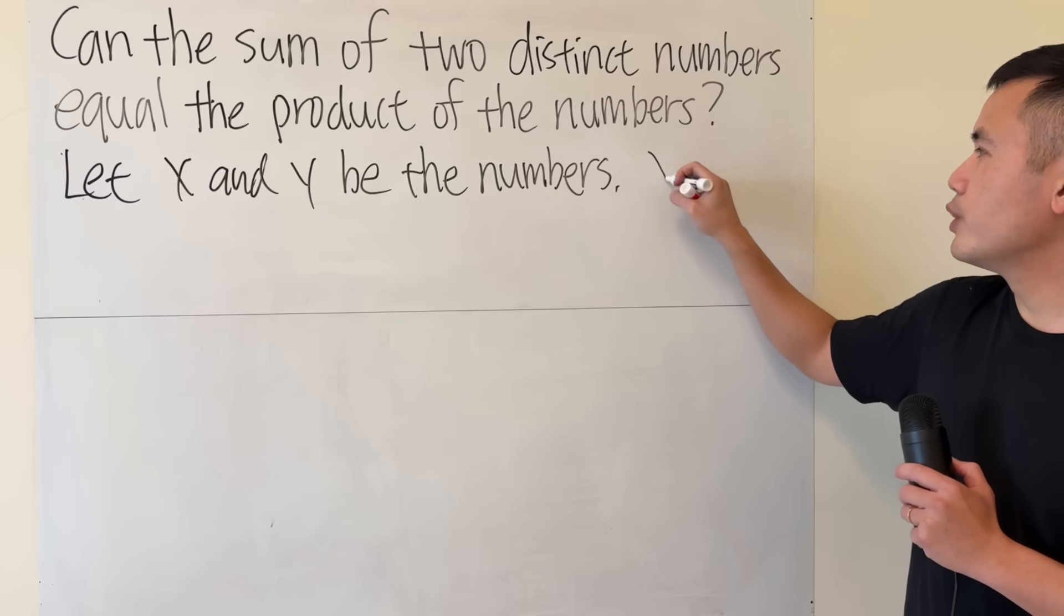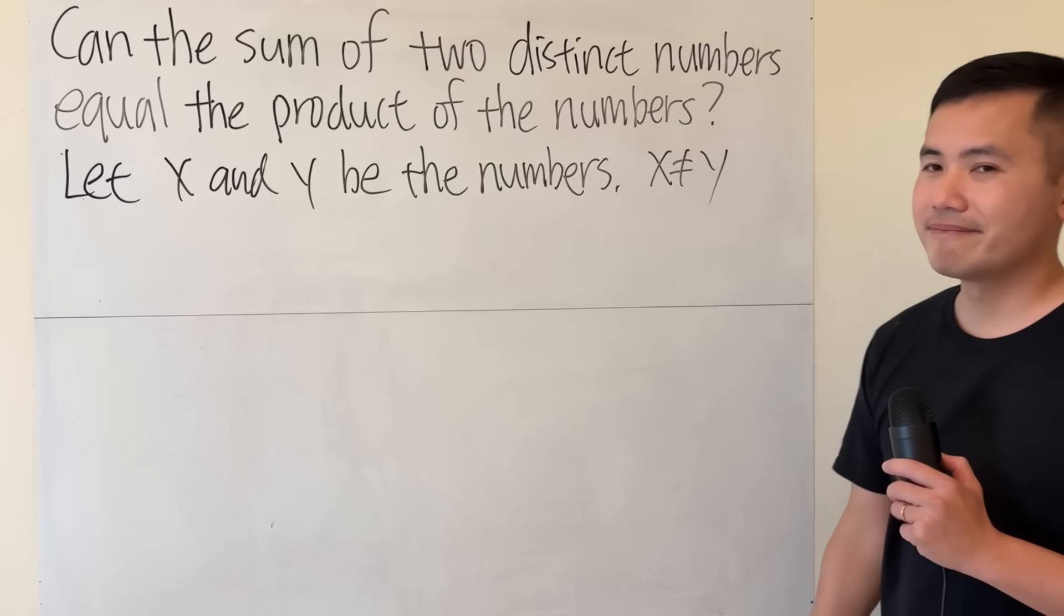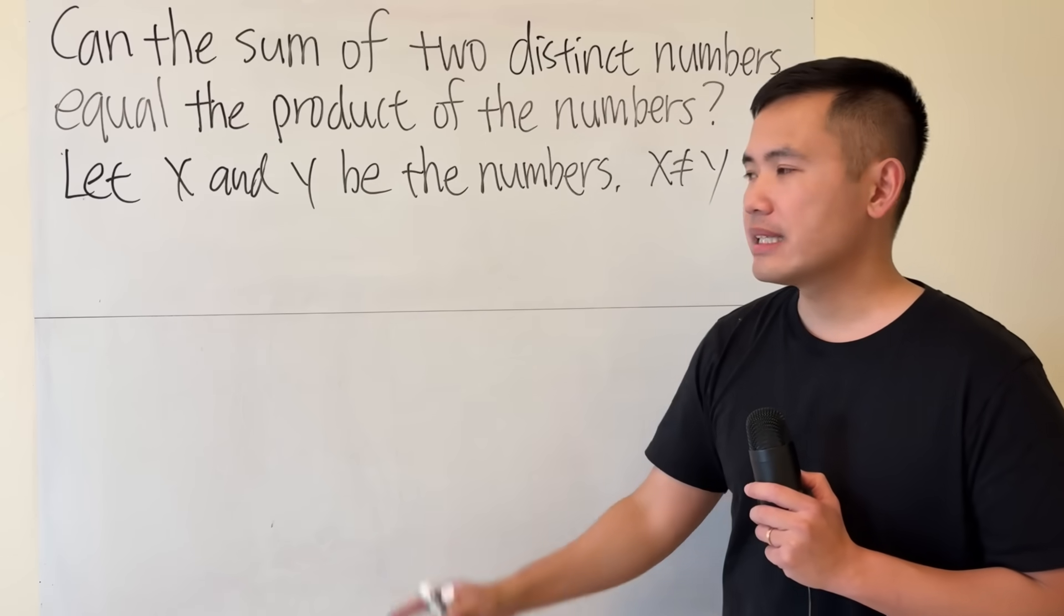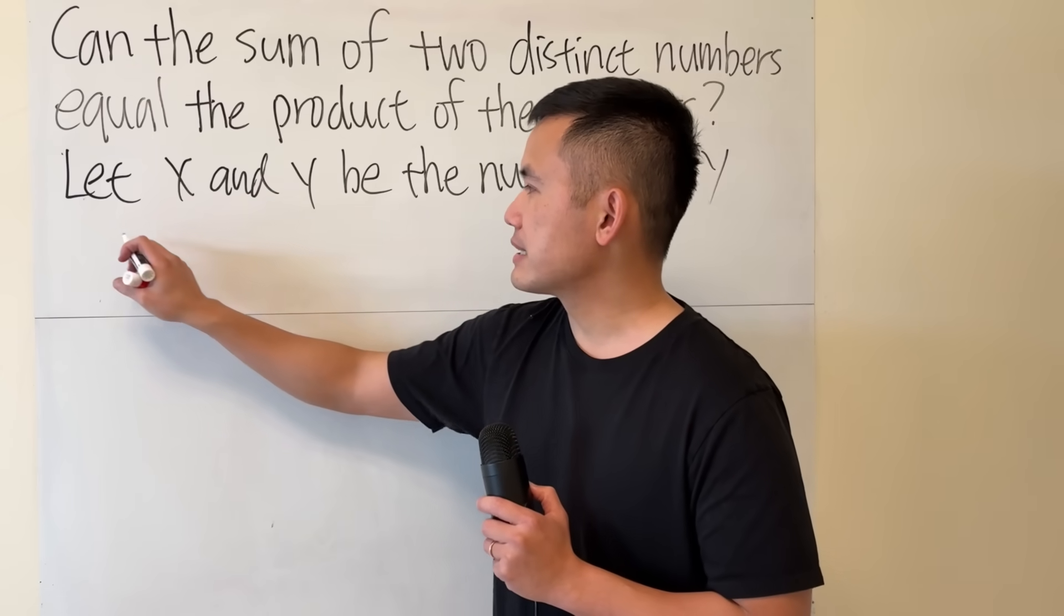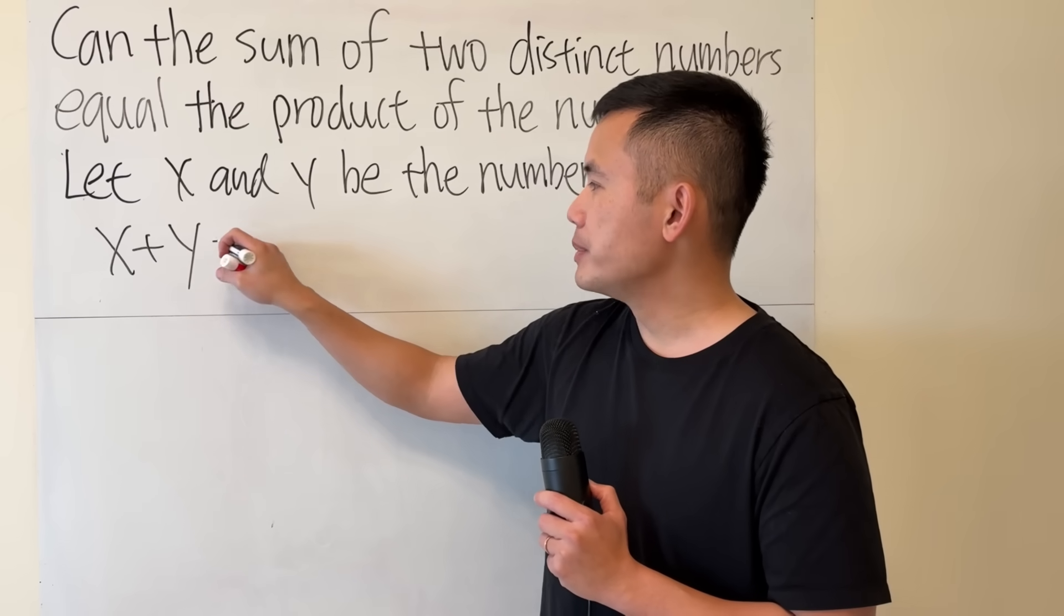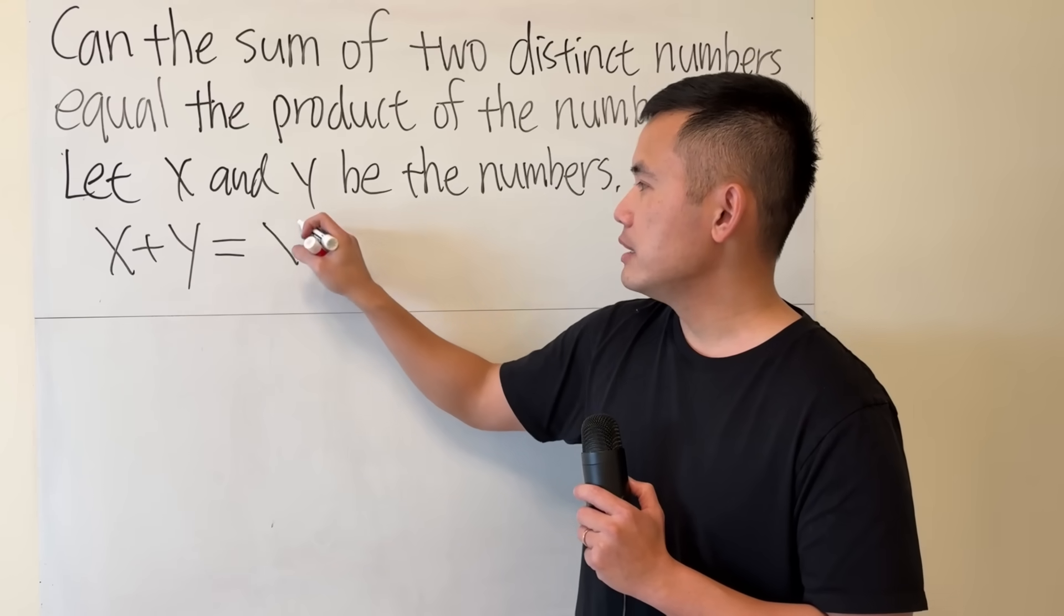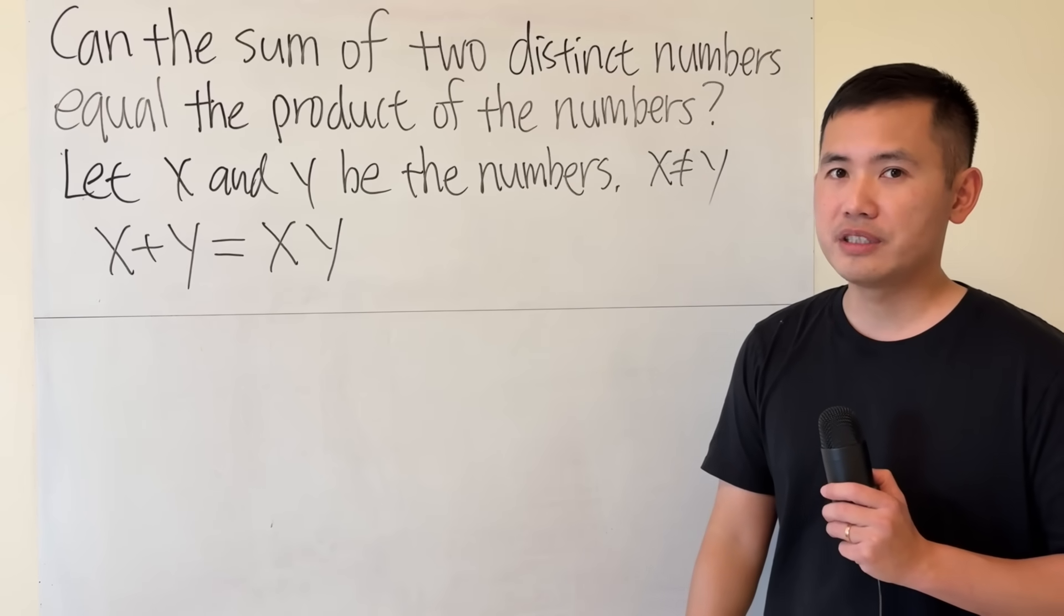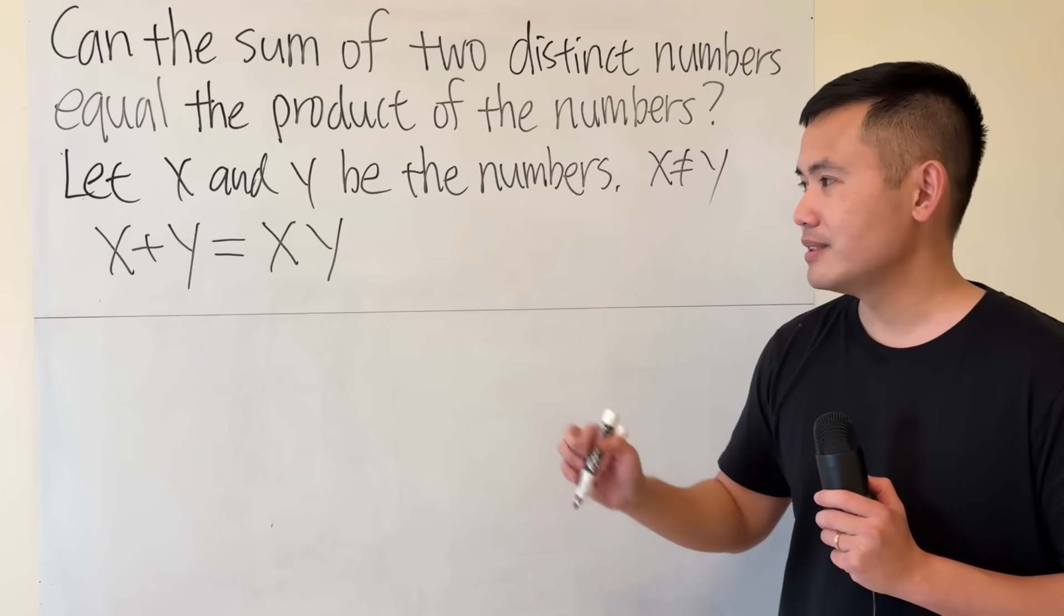And then, keep in mind that we don't want x to be equal to y. Now, if we want the sum to be equal to the product, all we have to make sure is x plus y, which is the sum, equals the product, which is x times y. And that's the only equation that we have to work with. This is not system equations, it's just one.